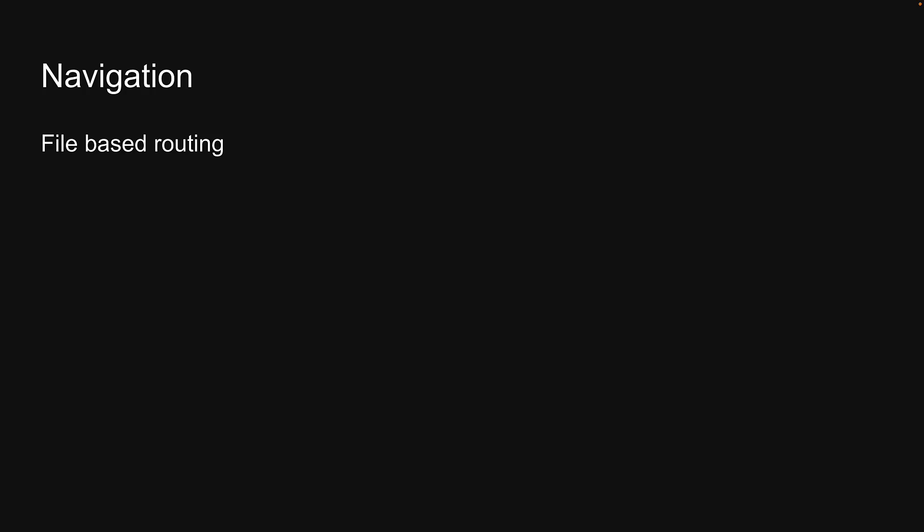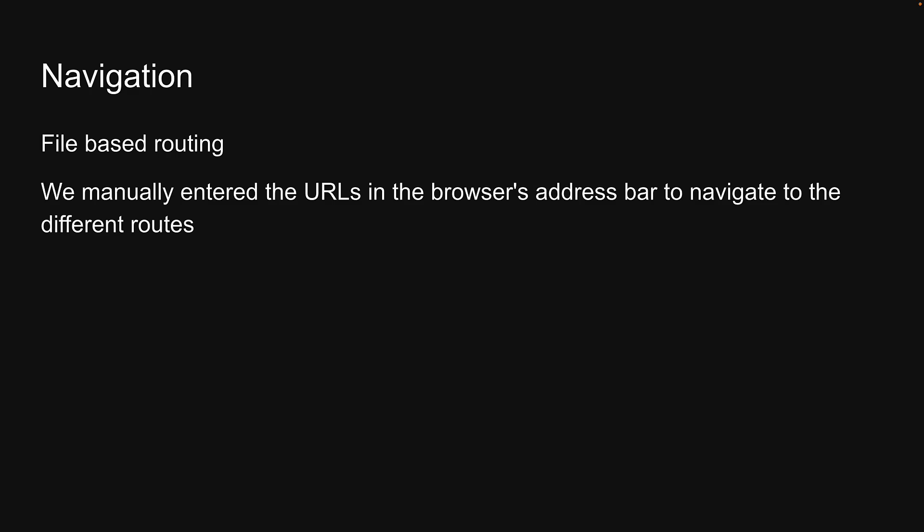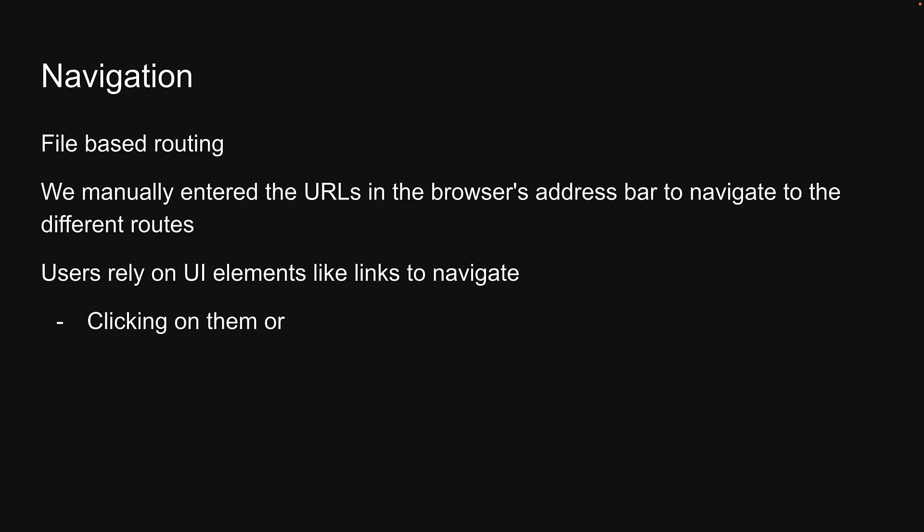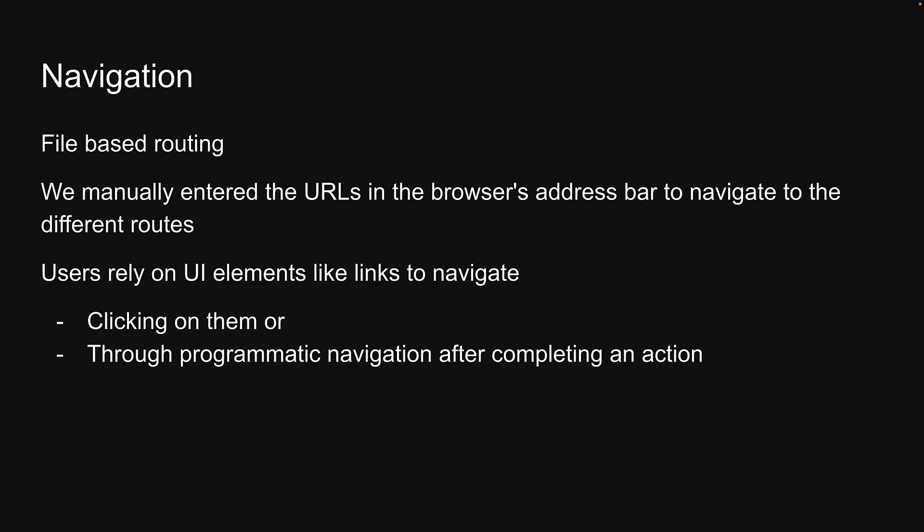Welcome back everyone. In the previous videos, we explored Next.js's file-based routing mechanism. We learned how to create routes for the root of our application, nested routes, dynamic routes, and catch-all routes. However, in those examples, we manually entered the URLs in the browser's address bar to navigate to the different routes. That is not how regular users would navigate our application.